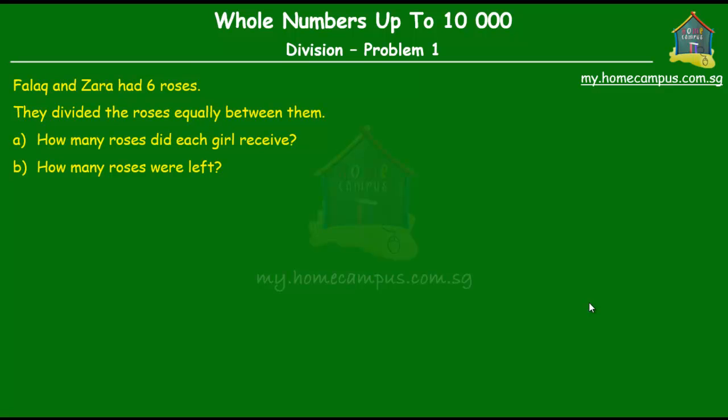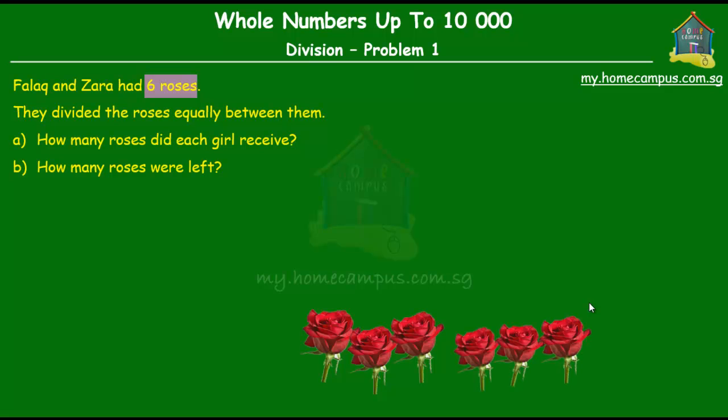Now the question here is, Falak and Zara had six roses. Okay, so here are our six roses. They divided the roses equally between them. How many roses did each girl receive and how many roses were left?